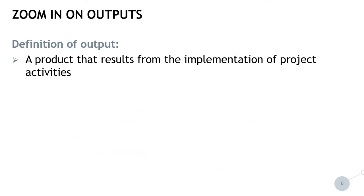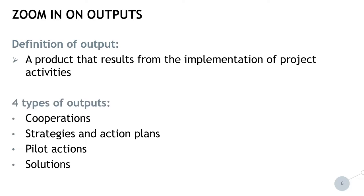Let us zoom in now on the outputs. An output is a product that results from the implementation of project activities. In our program we differentiate between four different types of outputs: cooperations, strategies and action plans, pilot actions, and solutions.